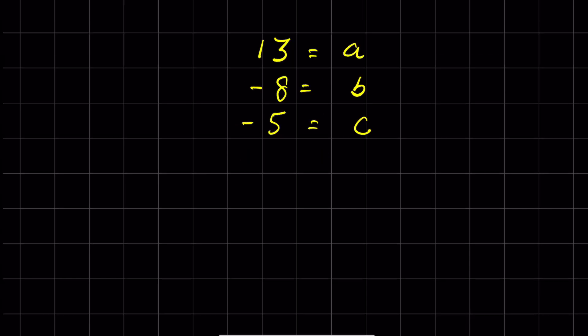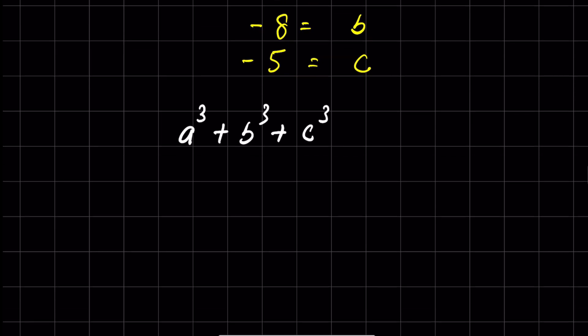Let's consider 13 as a, -8 as b, and -5 as c. So we can write this as a³ + b³ + c³. You can see here when we add a + b + c,